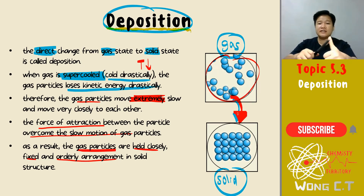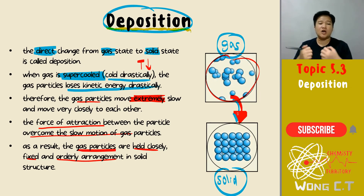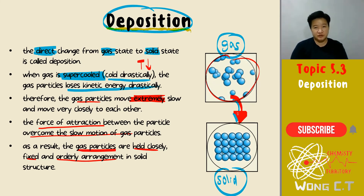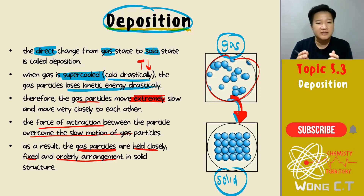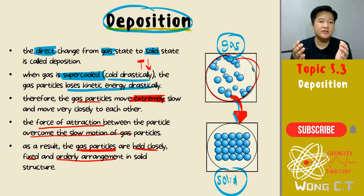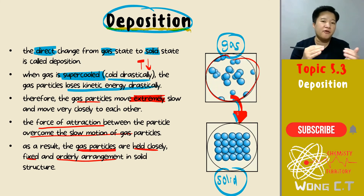To summarize deposition: drastically cold conditions cause kinetic energy to decrease drastically, particles move extremely slowly, they sit closer to each other, force of attraction becomes more significant and stronger, holding the gas particles in an orderly, fixed arrangement as a solid. Remember: in both sublimation and deposition, the words 'drastically' or 'extremely' are compulsory to differentiate them from regular freezing and melting.